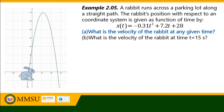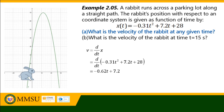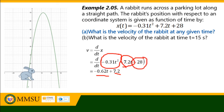The instantaneous velocity of the rabbit is computed by taking the derivative of x with respect to time. That is the derivative of: negative 0.31t² plus 7.2t plus 28. Taking the derivative term by term: the derivative of negative 0.31t² is negative 0.62t; the derivative of 7.2t is 7.2; and the derivative of the constant 28 is 0.